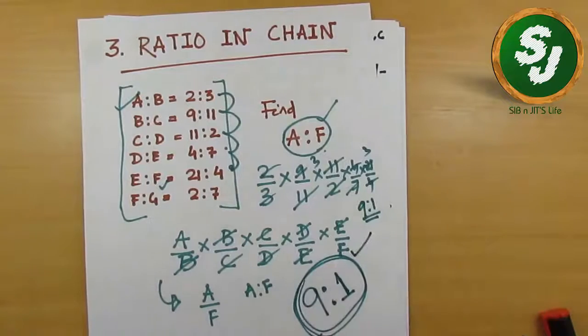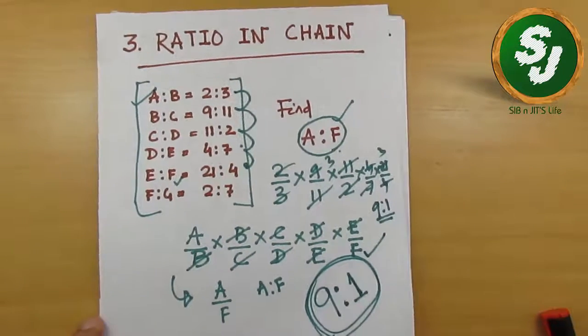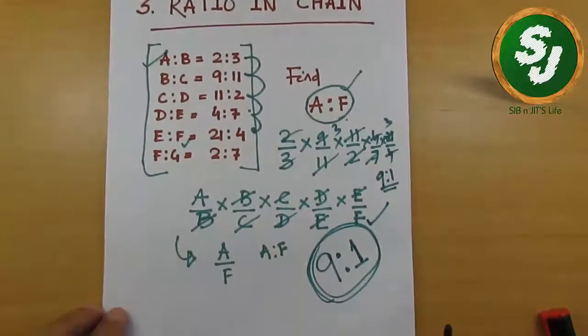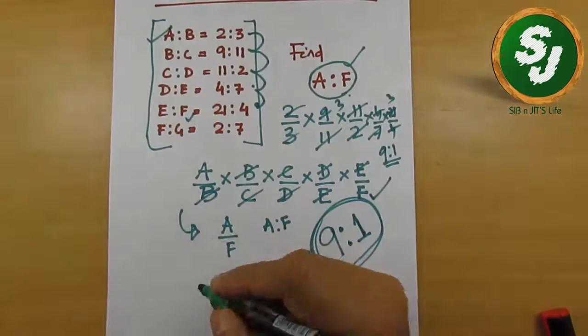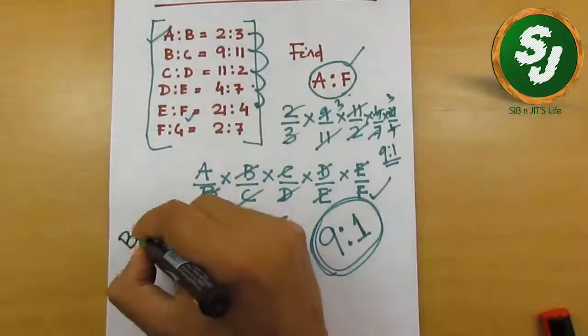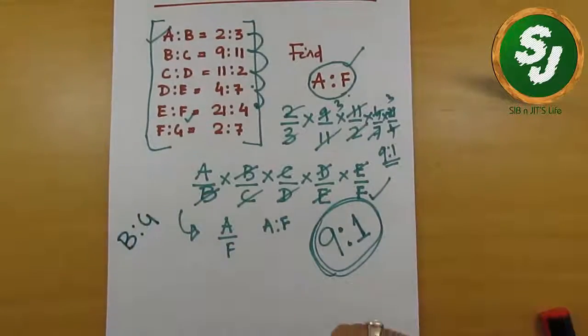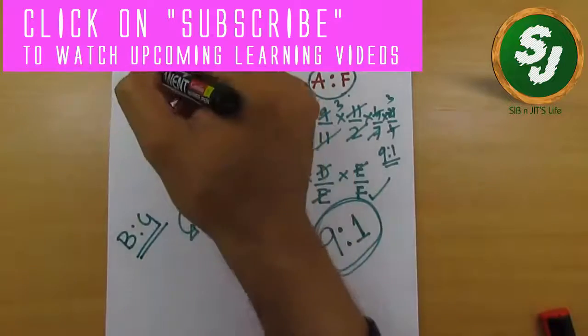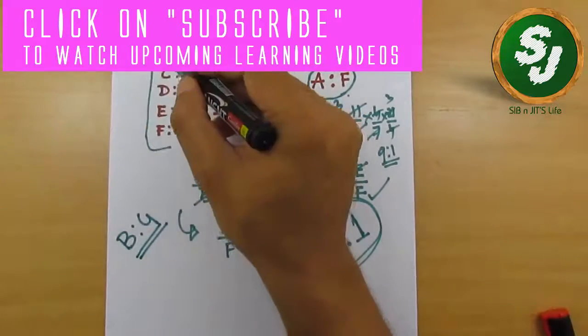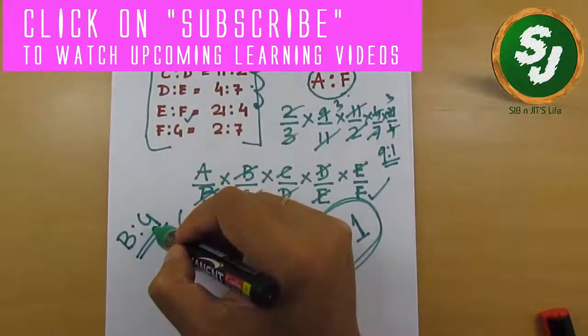In the same question, something else can also be asked. Let's create another question. I may ask you: B:G. What will you do to find the value of B:G? Have a look—where is B starting? Here B is starting. And G—look at the ratio where it is ending with G.